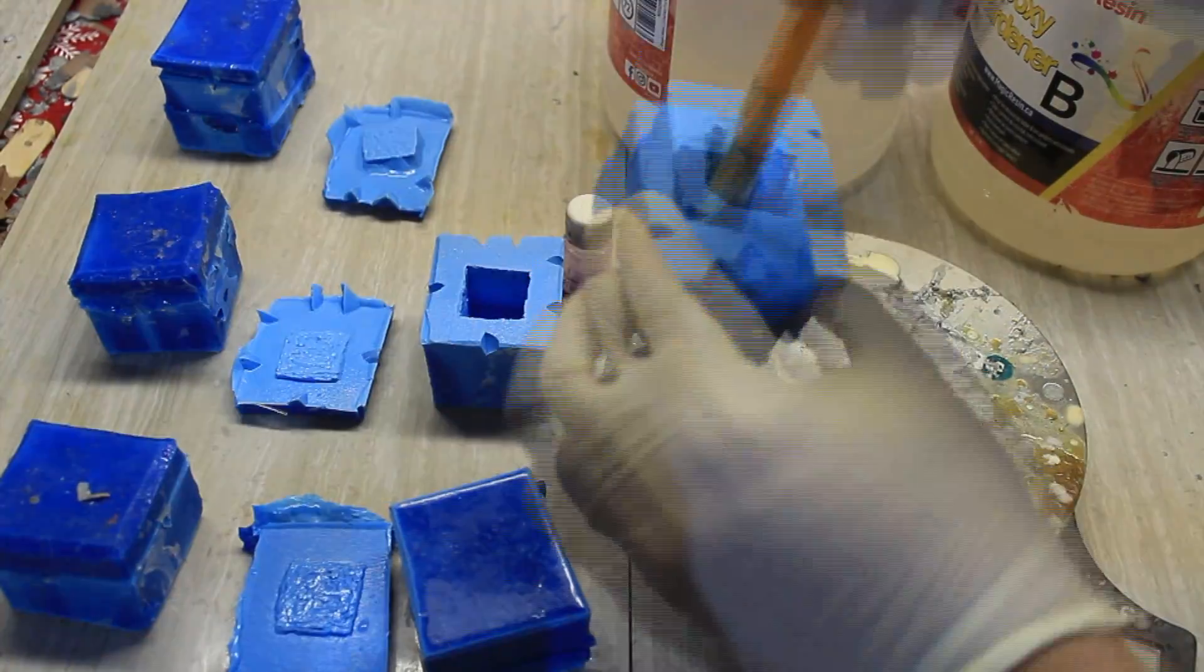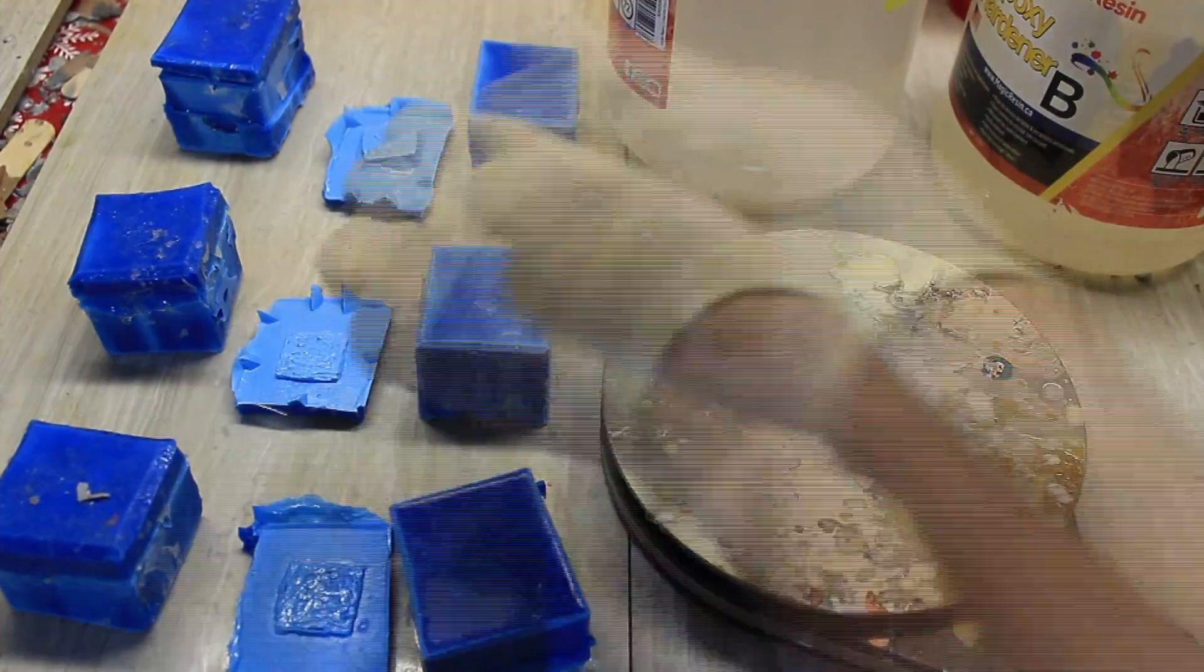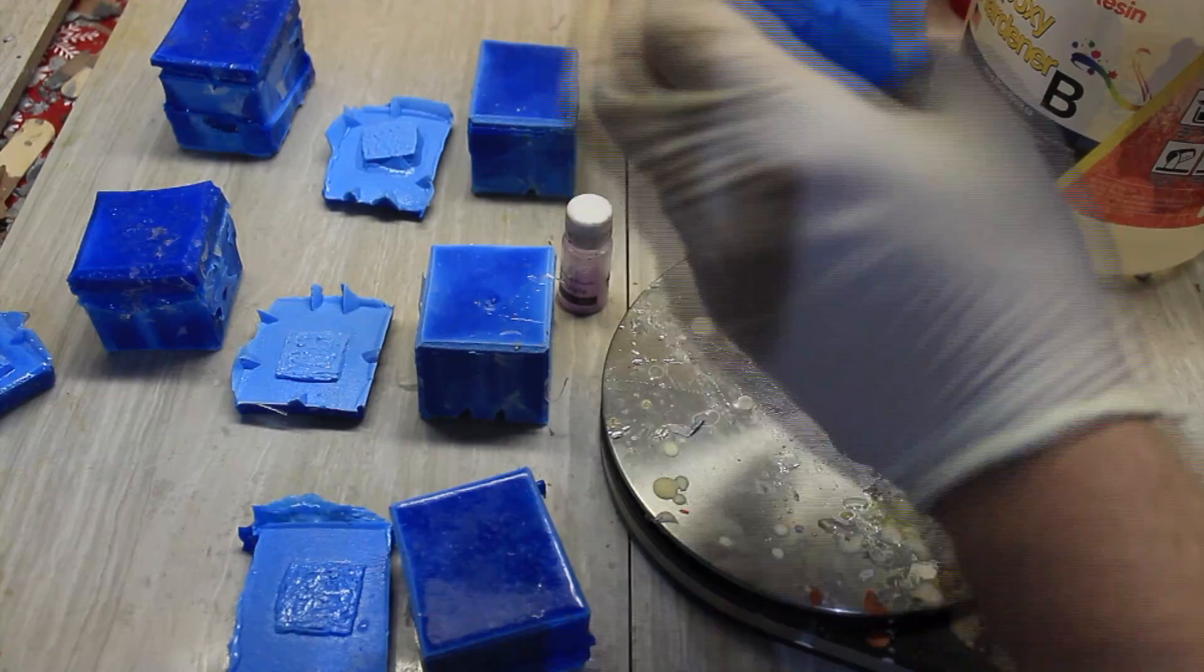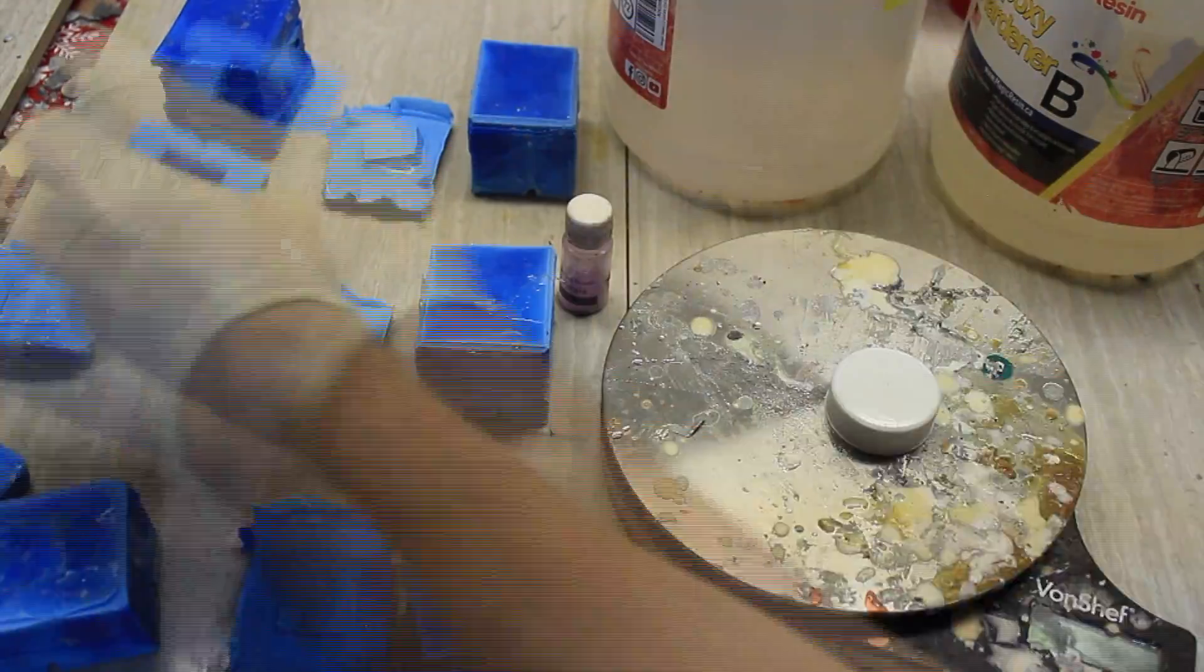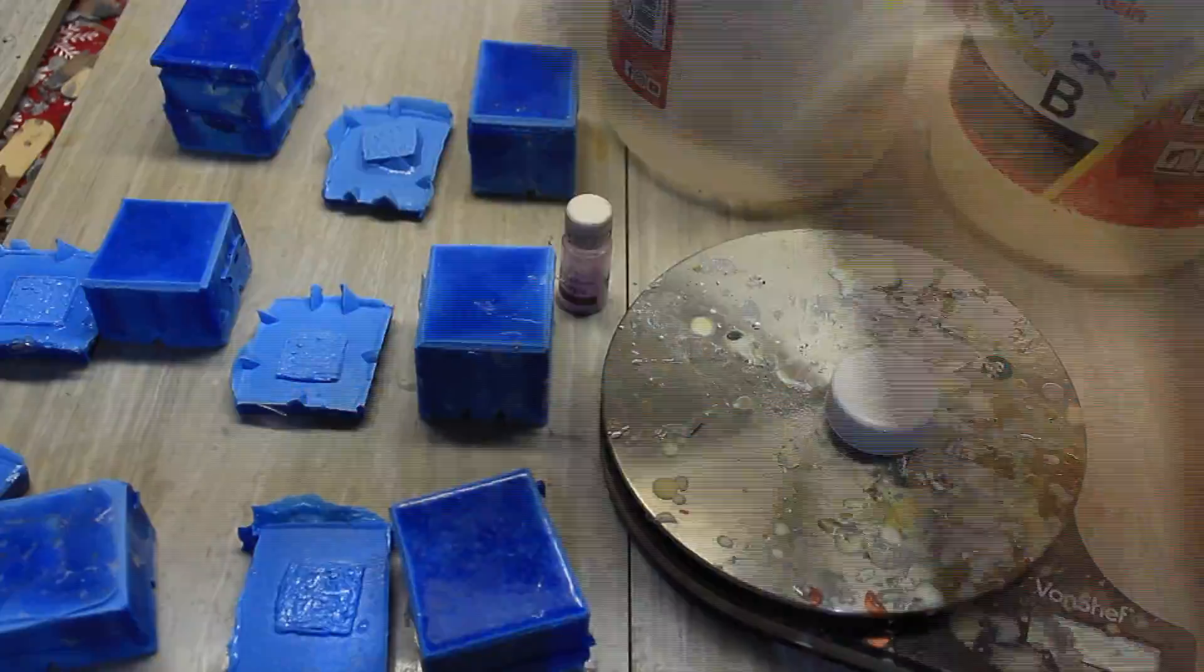paint in all the nooks and crannies, making sure you get every single spot in the mold so that the resin doesn't stick to the mold and comes out easily. It won't bond to the mold.